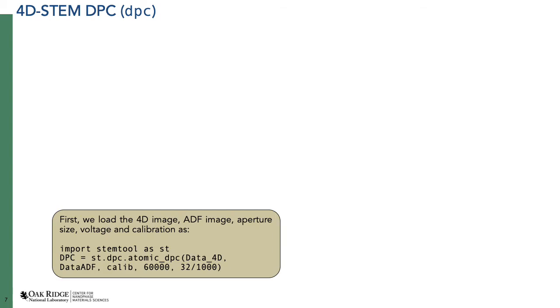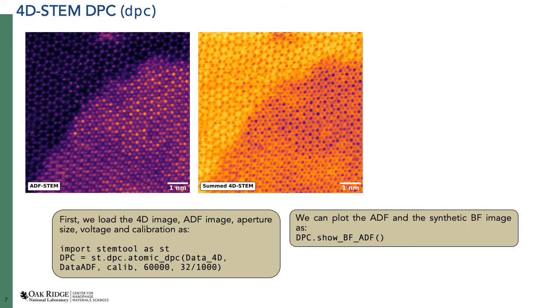The next sub-module is DPC. There are two different classes inside it: the NBED DPC and atomic DPC. I will be talking about only the atomic DPC class. Its positional arguments are the 4D dataset, the simultaneously collected ADF STEM image, calibration, voltage, and aperture. The aperture and voltage are needed to calculate a calibration for inverse Fourier space. You can then plot images using show_BF_ADF. The left image is the ADF image simultaneously collected, and the right brighter image is the synthetic BF STEM image generated by summing up the CBED patterns, which looks complementary to the ADF STEM image.